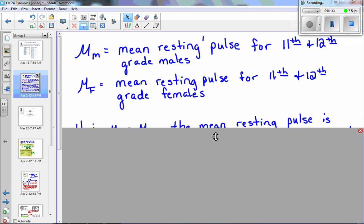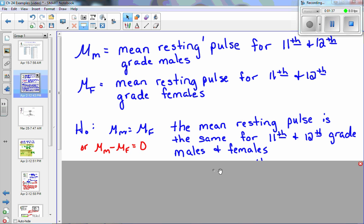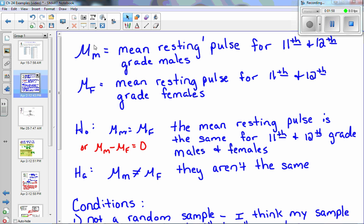Then I need a hypothesis. My null hypothesis is going to be that μ sub m equals μ sub f. In words, the mean resting pulse is the same for 11th and 12th grade males and females. By saying they're the same, I could also say μ sub m minus μ sub f is zero, so really I'm saying that the difference is zero. My alternative hypothesis, because the question asks is there a difference, will be μ sub m is not equal to μ sub f. Depending on your question, you have to pay attention to whether it's going to be a right tail test, a left tail test, or a two-sided. In this case, it's a two-sided.